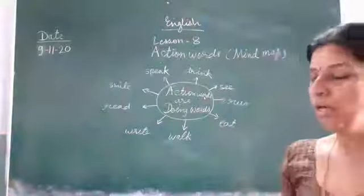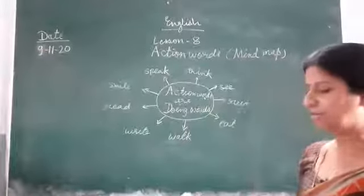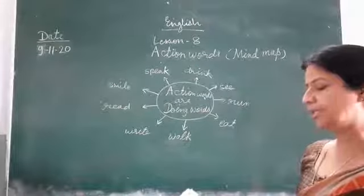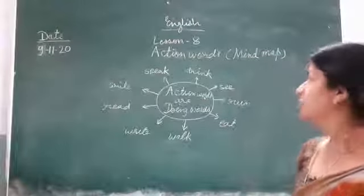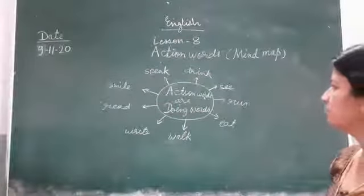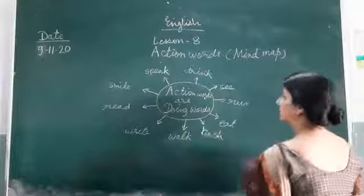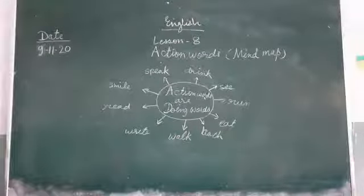Action words — doing words — are called action words, which you can do. Hop here, jump there, come here. Smile a little, laugh. Walk, come and talk. Scream a little, sing. Put your hands together and clap. You can tell ten action words and explain why they are action words.